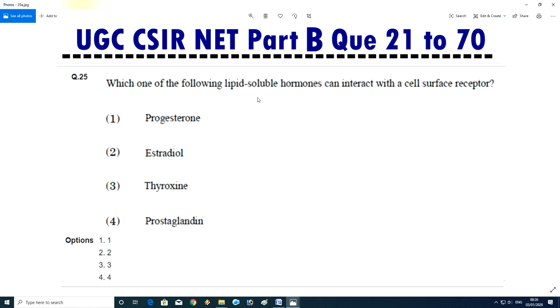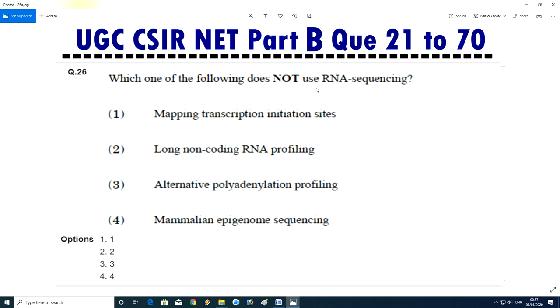Question No.26/27 - Which one of the following lipid soluble hormone can interact with a cell surface receptor? Progesterone, estradiol, thyroxine, or prostaglandin. Answer is D, prostaglandin. Prostaglandin is also the one kind of hormone which is generally produced by male as well as female. From male, produced from seminal vesicle which increase the softness of female body when this semen enters from male to female body.